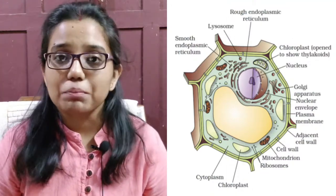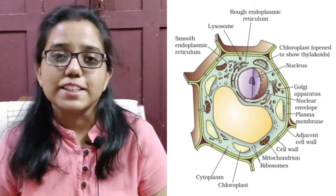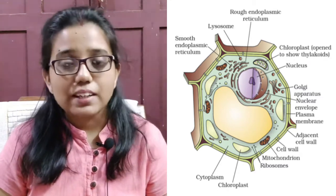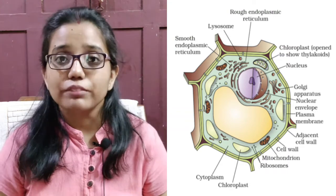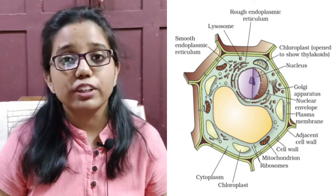We know there is division of labor in multicellular organisms such as heart pumps blood, stomach digests food and so on. Similarly, there is also division of labor within a single cell. Each cell has some specific components for different functions.